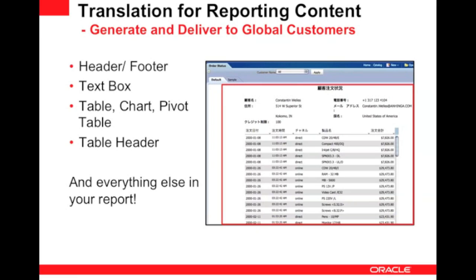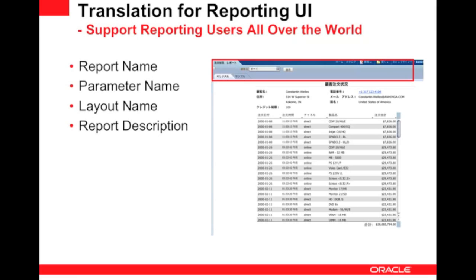There are two things you can do with BA Publisher's translation. One is translating the reporting content. For example, if you're an English speaker, you operate in your preferred language, English, but you need to generate the report's content in your customer's preferred language. You can translate the report header, text boxes, table and column headers, and everything else inside the report. Another scenario is to support multilingual users, where users want to see everything in their preferred language — not just reporting content, but also the report name, parameter name, layout name, and report description. BA Publisher supports that scenario as well.